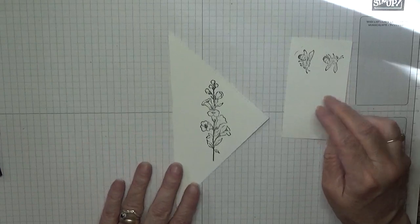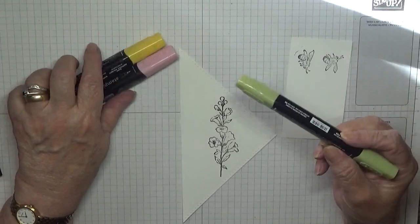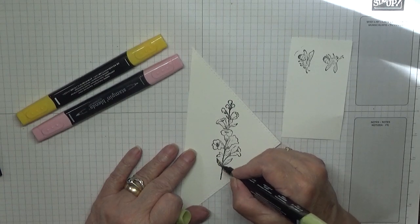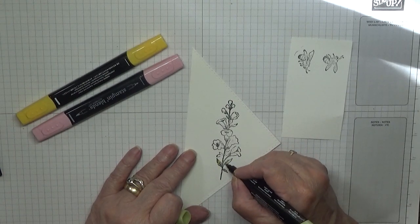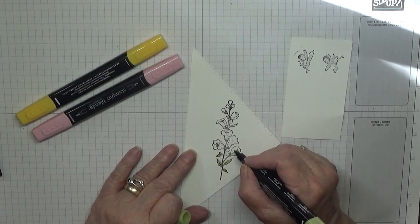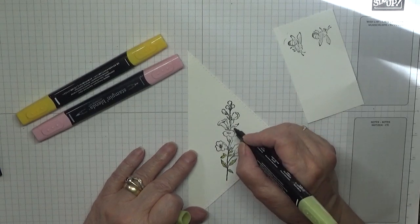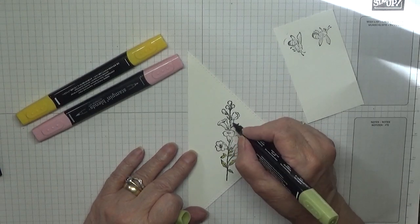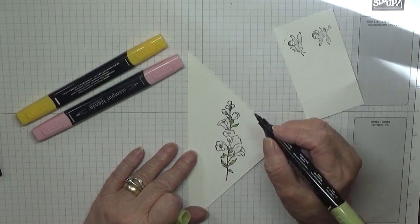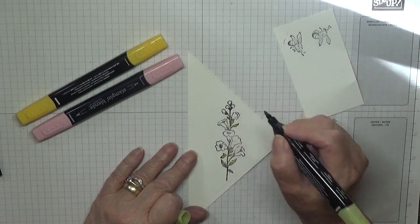Right, now we're going to color these in. I've got my three pens. I've got Old Olive Light—this is for the leaves and the stem. All these leaves in, just do the bottom of the buds.